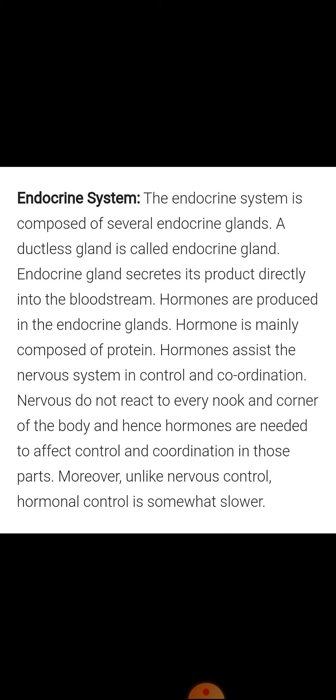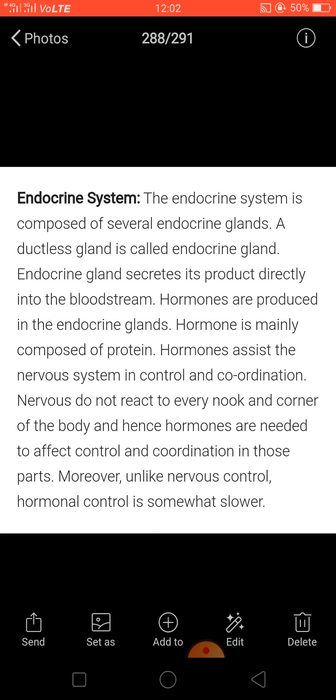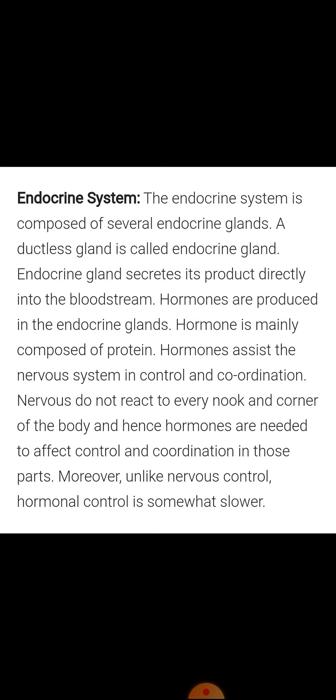But we are more concerned about endocrine glands, because we have to study the endocrine system, which is also called the hormonal system. The endocrine system is composed of several endocrine glands — also known as ductless glands — which secrete their products directly into the bloodstream. What they secrete are hormones. Various types of hormones are secreted by different organs, and different hormones have different functions.